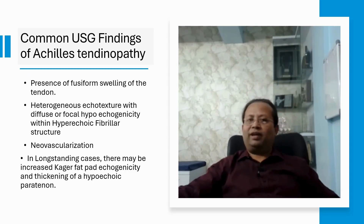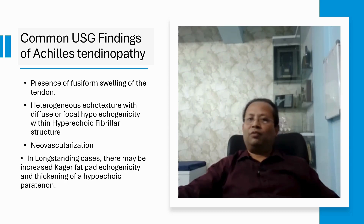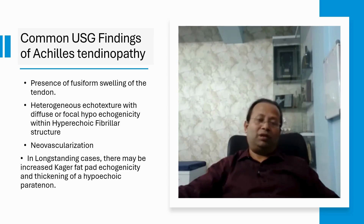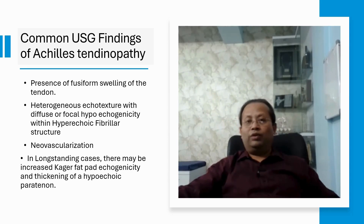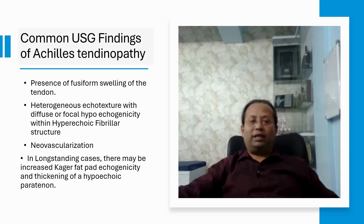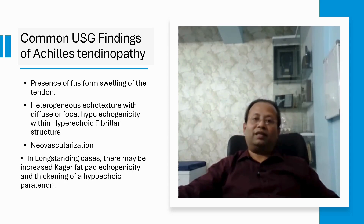The common ultrasound findings of Achilles tendinopathy are: first, fusiform swelling of the tendon, typically 1 to 2 cm proximal from the insertion; second, heterogeneous echostructure with diffuse or focal hypoechogenicity within the hyperechoic fibrillar structure; and third, neovascularization visible under color Doppler in acute cases of tendinitis.